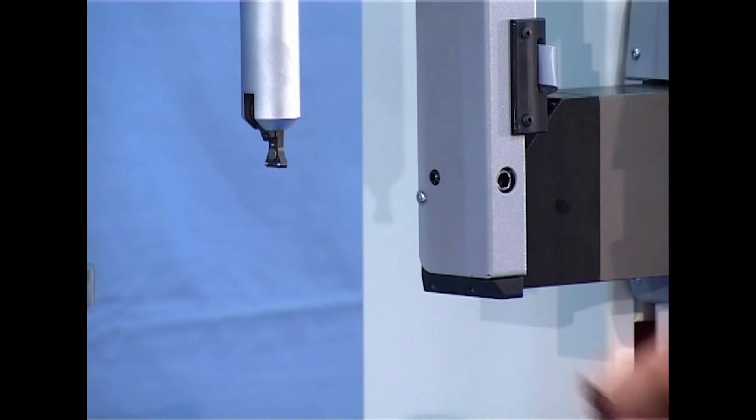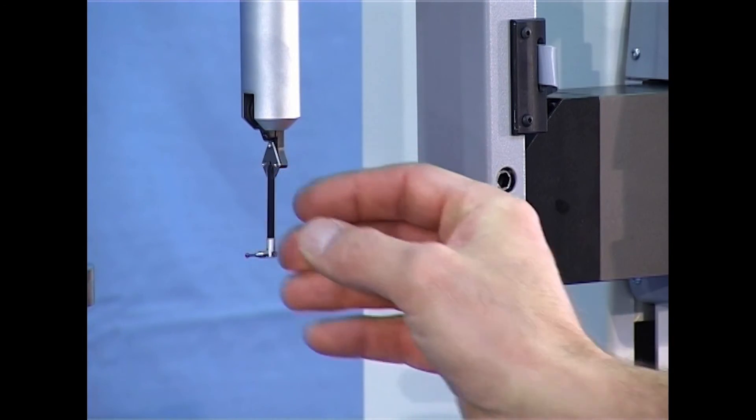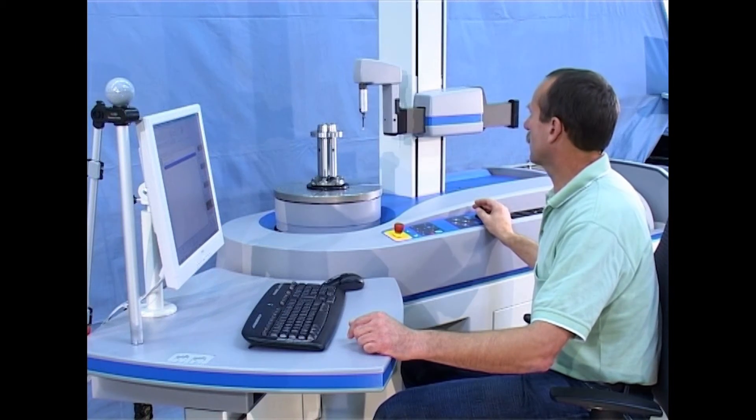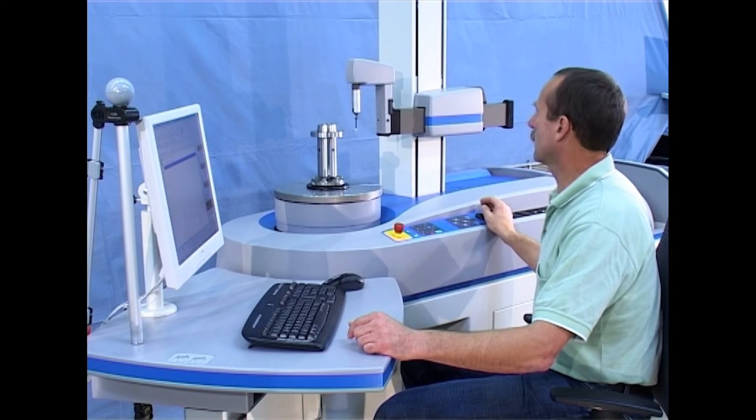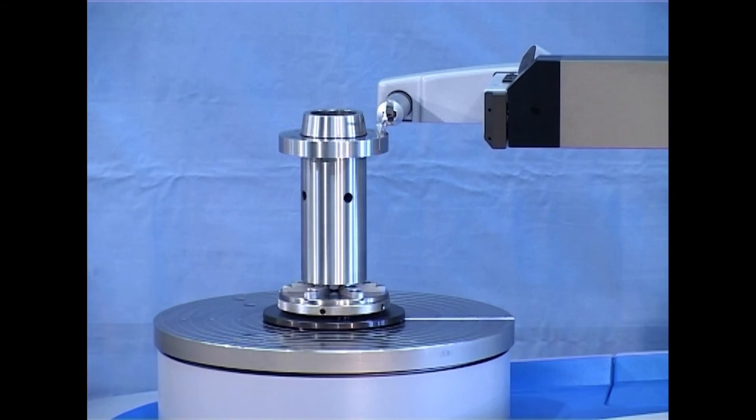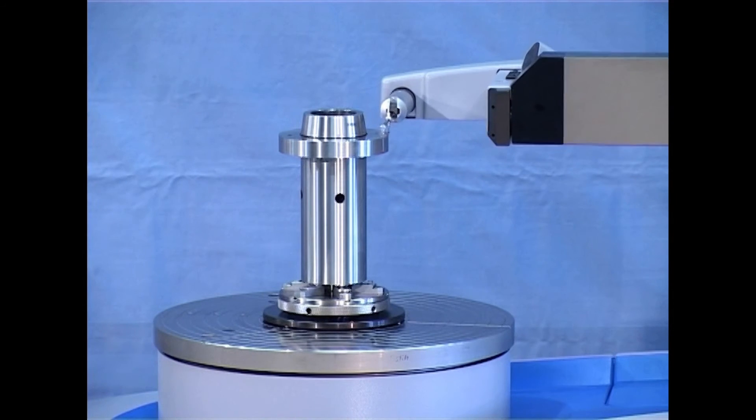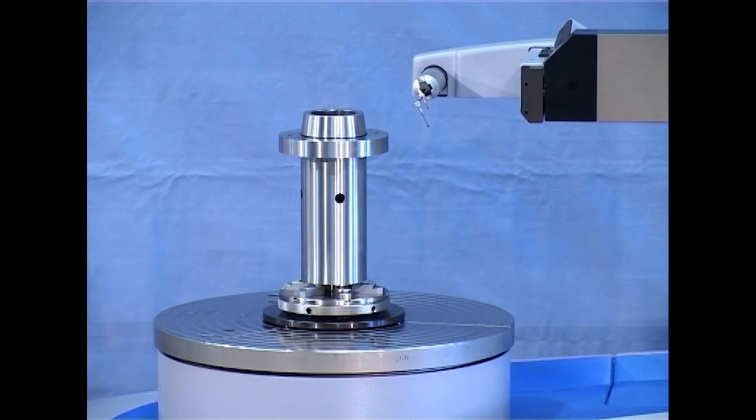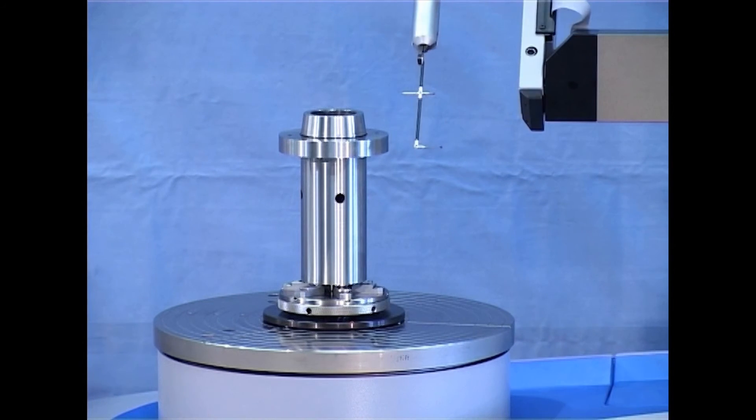All operating elements and accessories have an optimum arrangement. Hommel-RoundScan meets complex measurement requirements of close to production metrology at the highest level.